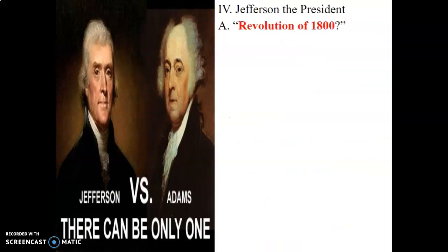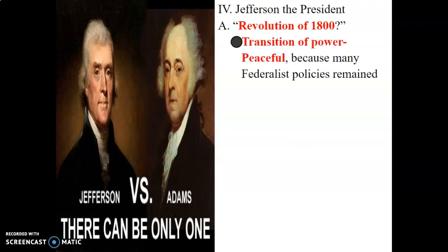Jefferson as president: George Washington did not belong to a political party. Right after that, John Adams was a Federalist. Then we have the Revolution of 1800, where Thomas Jefferson and John Adams competed for president — eventually Jefferson won. The reason it's called the Revolution is because we moved from one party to the other peacefully, a transition of power between the Federalists and the Democratic-Republicans, which was Jefferson's party. Even though the Federalists lost power, the Federalist policies remained, and we'll learn how that becomes a problem.